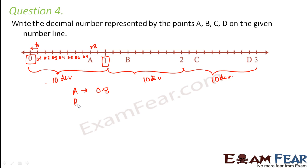Similarly, what would be B? So B lies after one. So if this is one, this would be 1.1, 1.2, 1.3. So B is 1.3.